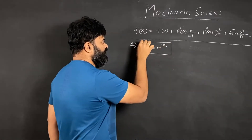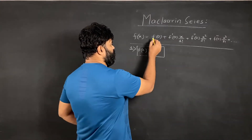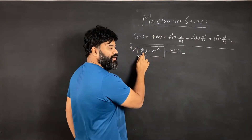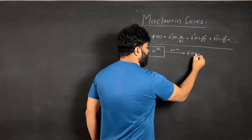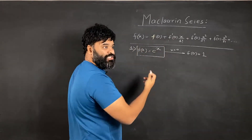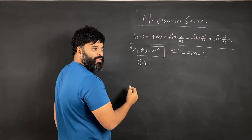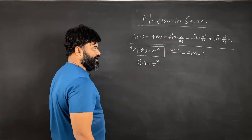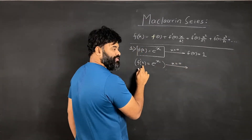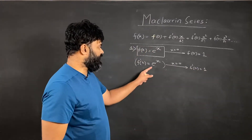We have this function and we want to find its power series. To get f of 0, I'll put x equal to 0, which gives e raised to 0, which is 1. Next, to find f dash of 0, I differentiate the function. The derivative of e raised to x is just e raised to x, and putting x equal to 0 gives f dash of 0, which is also 1.